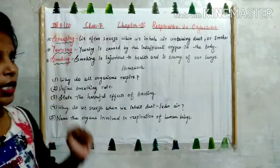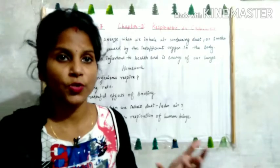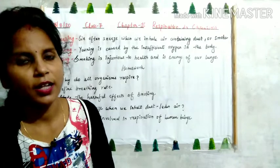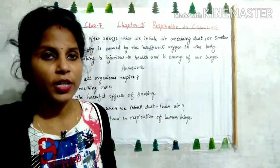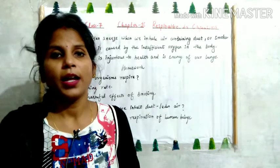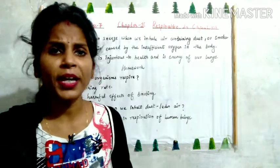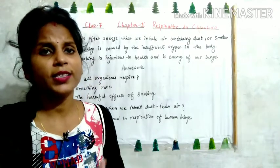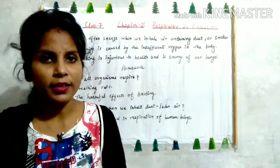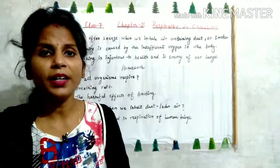Third is smoking. As we all know, smoking — dhumrapan — is very injurious to health. It is the enemy of our lungs. Smoking, whether bidi, cigarette, or cigar, is not good for health. There are bad effects of smoking: first, it affects our lung tissue; second, it causes lung cancer; and third, it causes many heart diseases as well.